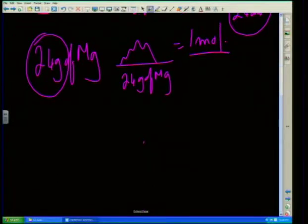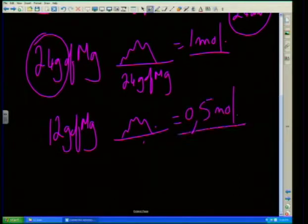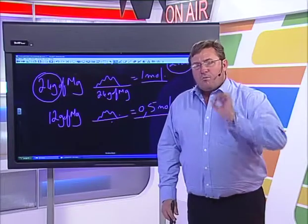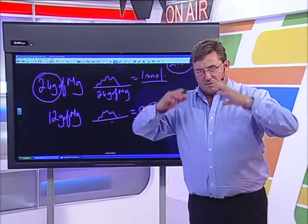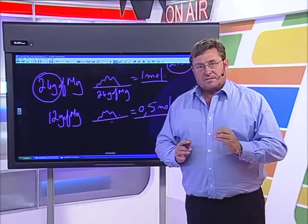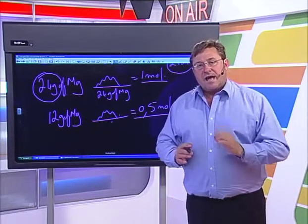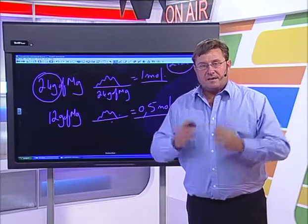What happens if I've got 12 grams of magnesium? I've got half that amount, so I will have half a mole of that substance. Most importantly, if we're dealing with mass, the relative atomic mass of that substance expressed in grams is going to give us an indication of how many moles we have got of a particular chemical substance.